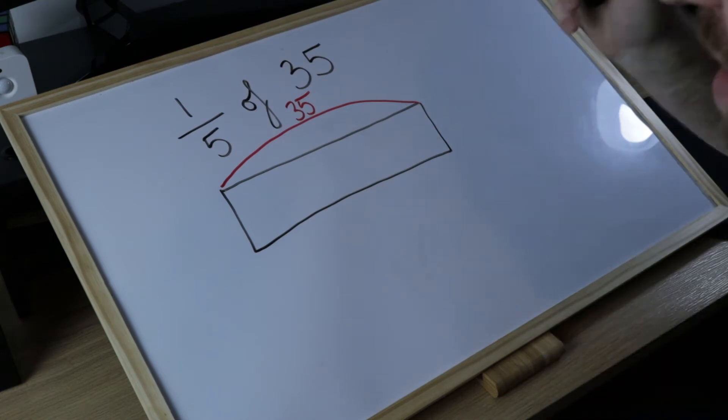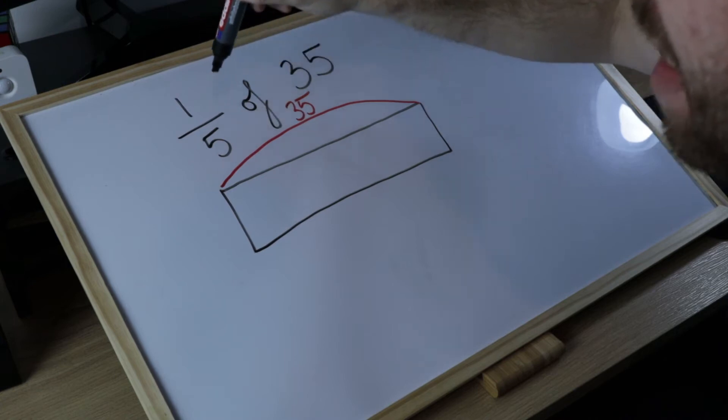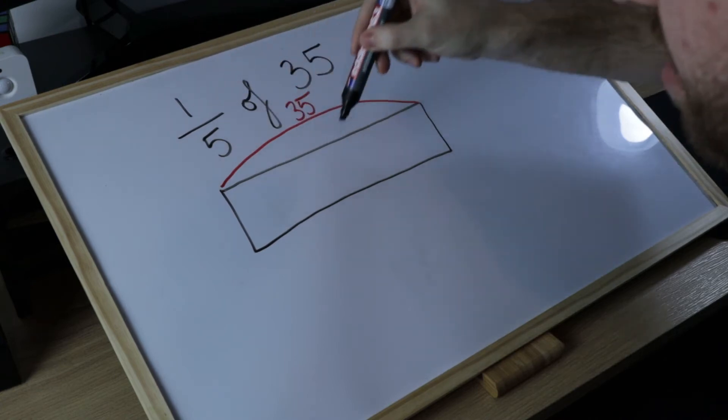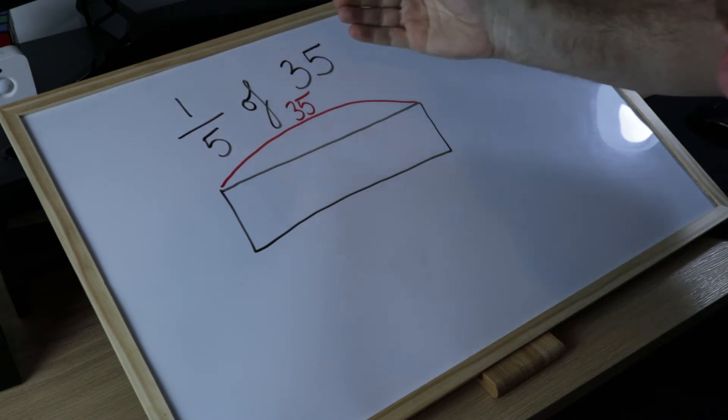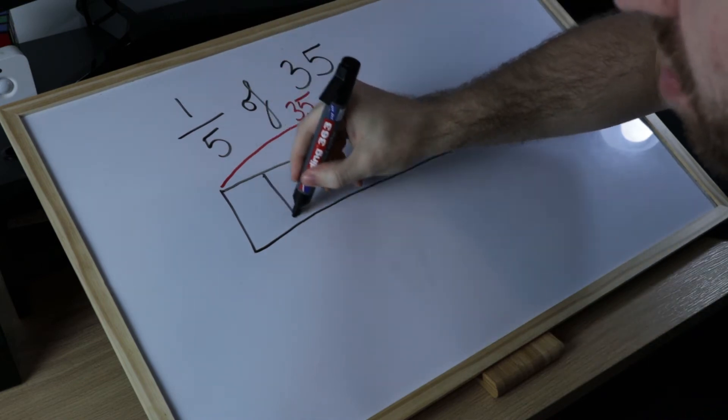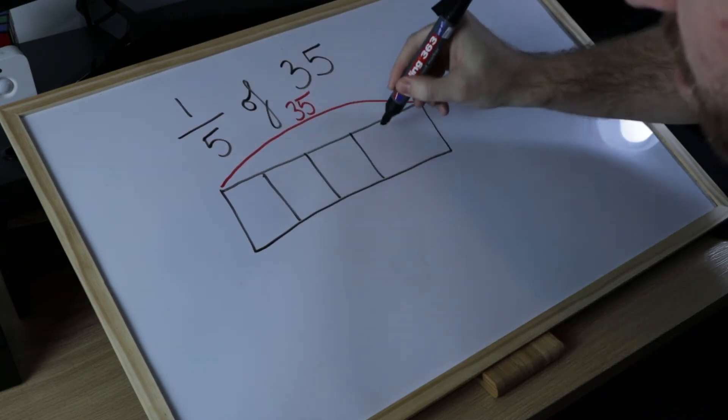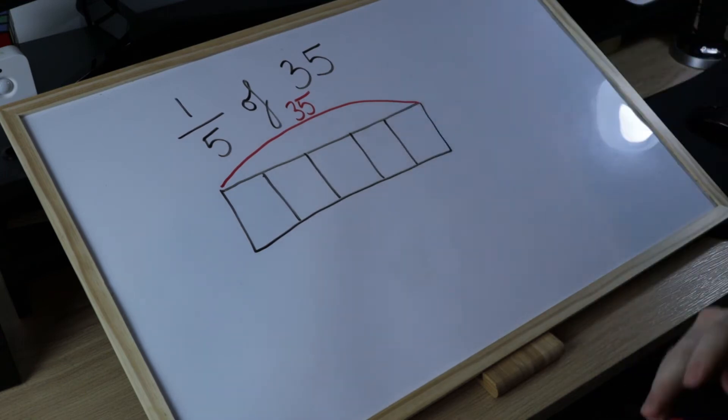Now thinking about what the denominator shows us, this number here tells us how many equal parts we need to split this whole into. We need five equal parts. So the first step would be to split our bar into five equal parts just like that.